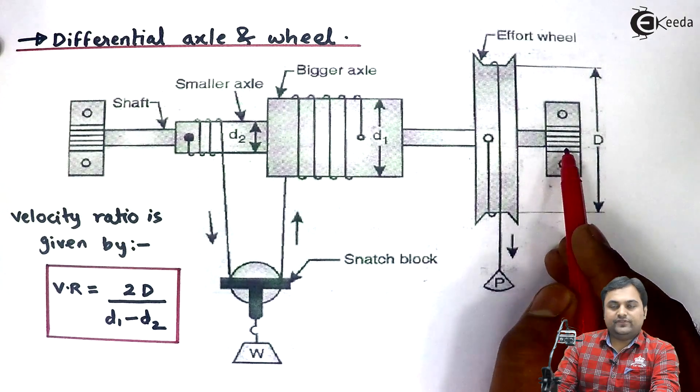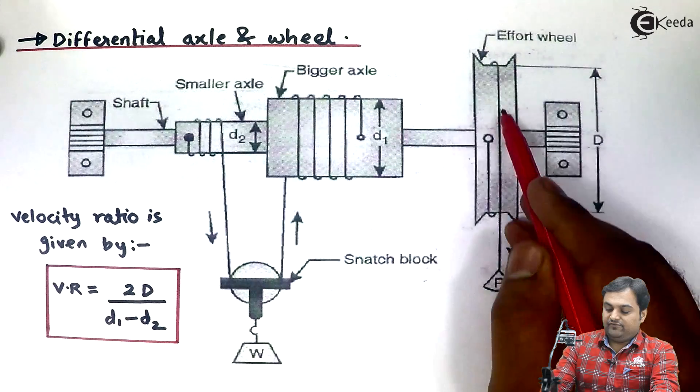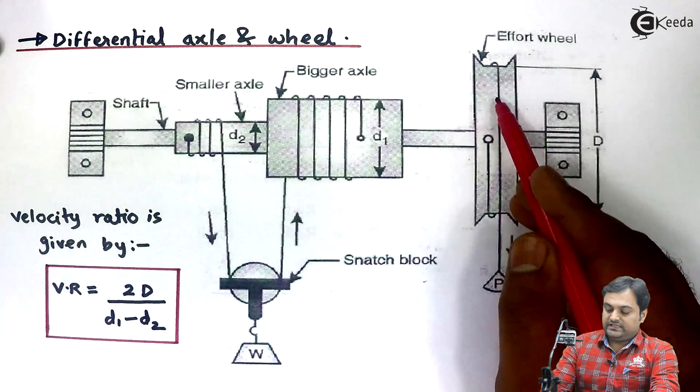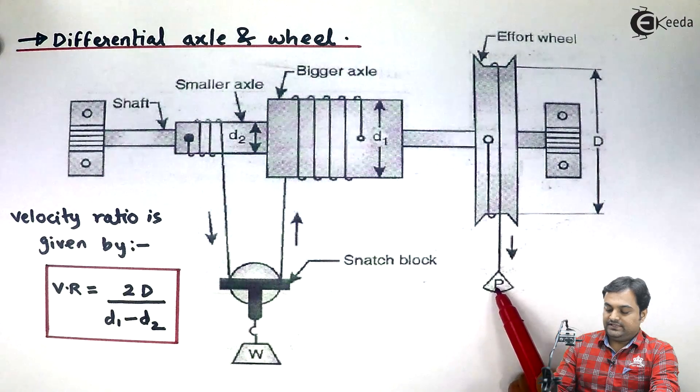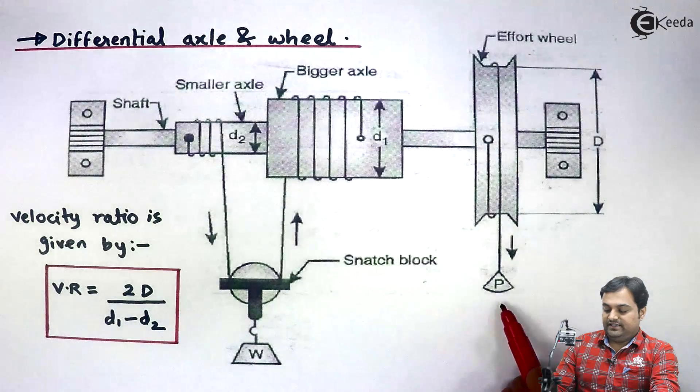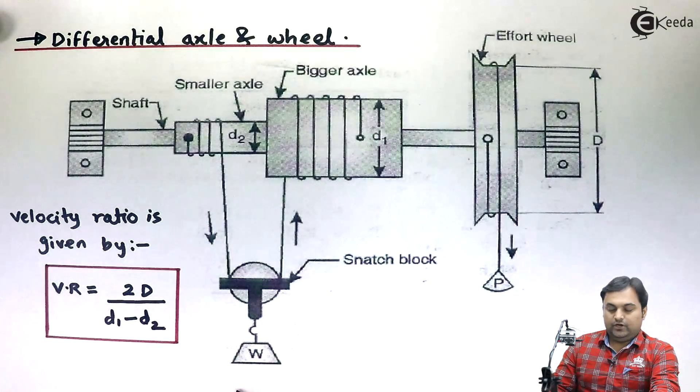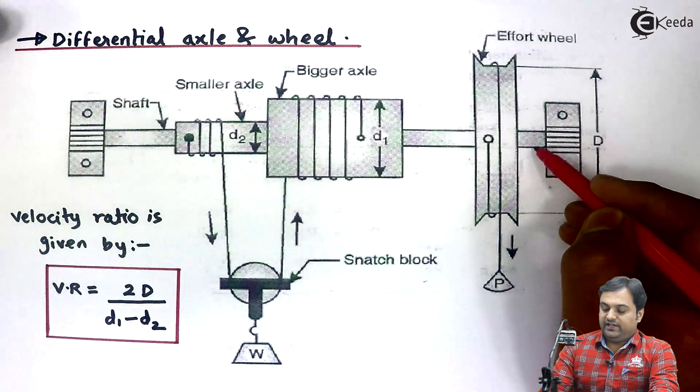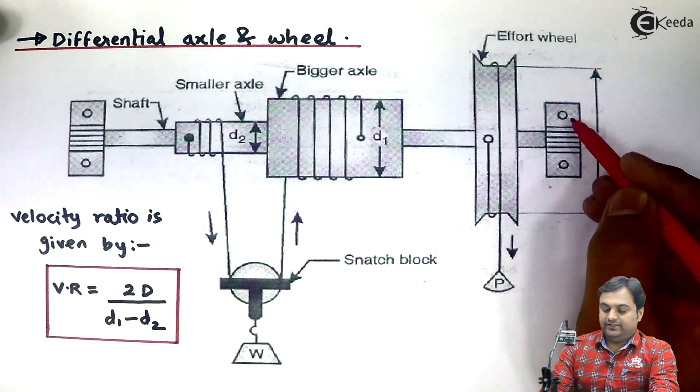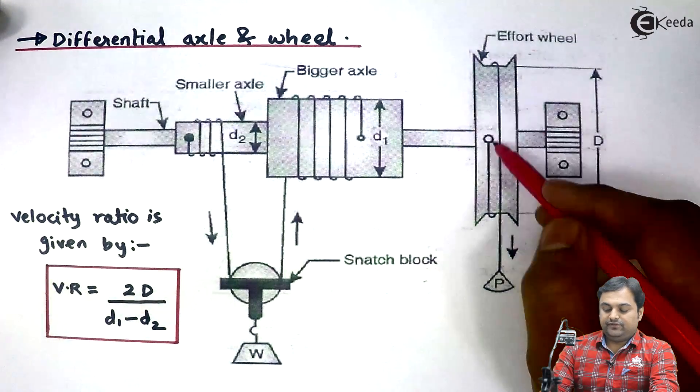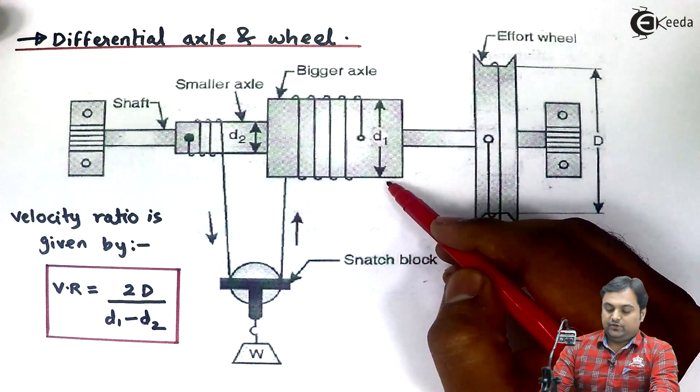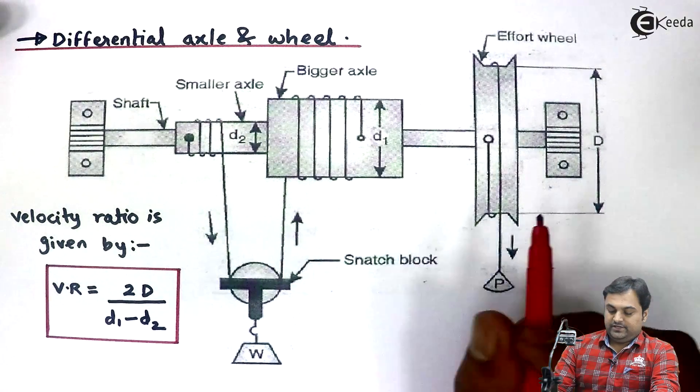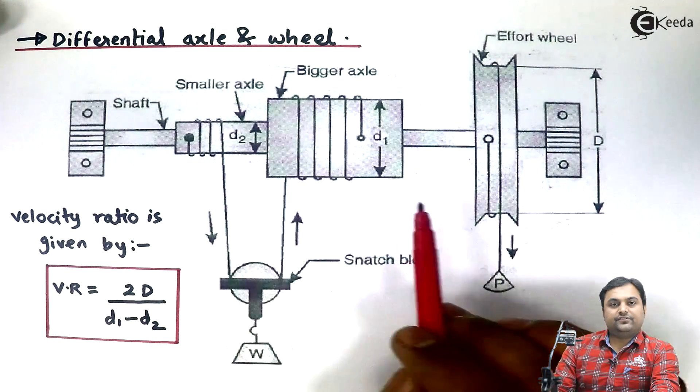On the other side of the axle we have an effort wheel which is a bigger wheel as compared to both the axles. On this effort wheel we are attaching an effort which we apply. This is the input quantity and here is the output quantity. Next, the effort wheel has a shaft which is supported in bearings. Capital D is the diameter of effort wheel. Small d1 is the diameter of bigger axle. Small d2 is the diameter of smaller axle. So this was regarding the construction part.